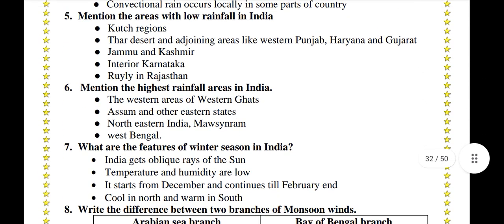Mention the areas with low rainfall in India. Kutch region, Thar Desert and adjoining areas like western Punjab, Haryana, and Gujarat, Jammu and Kashmir, interior Karnataka, and Rawli in Rajasthan.